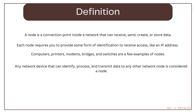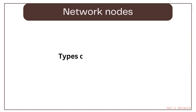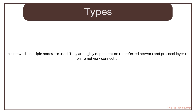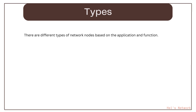Any network device that can identify, process, and transmit data to any other network node is considered a node. There are seven different types of network nodes based on the application and function.